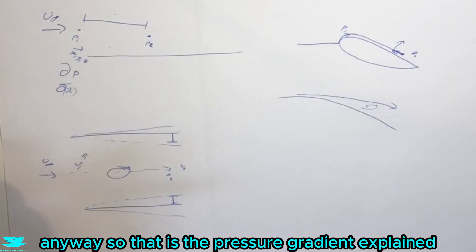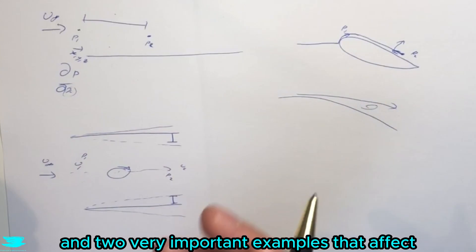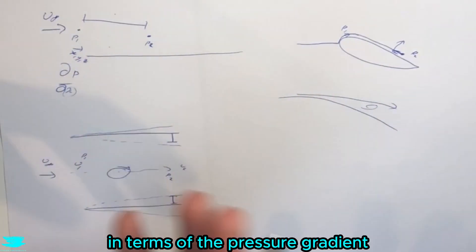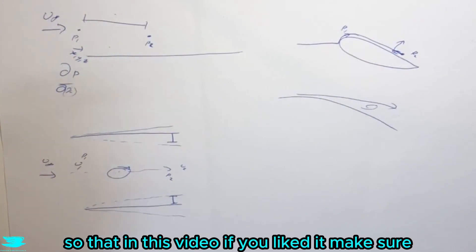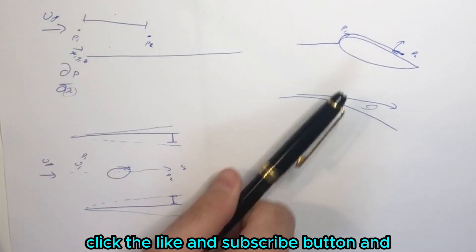So that is the pressure gradient explained and two very important examples that affect so much in aerodynamics in terms of the pressure gradient and potentially what we can do to overcome it. If you like this video, make sure to click the like and subscribe button. Peace amigos!